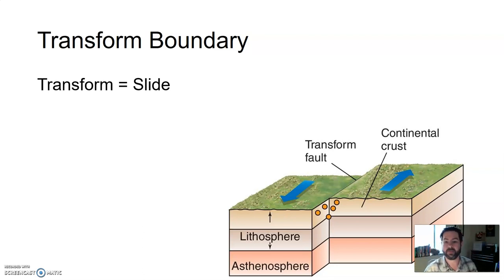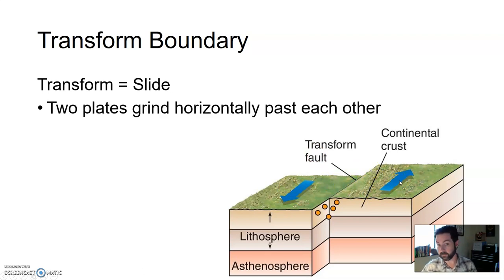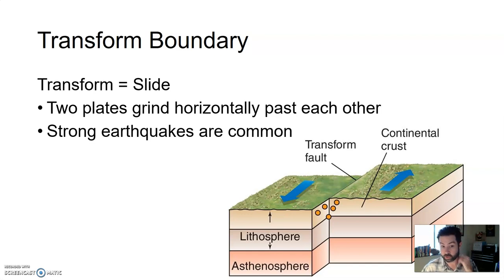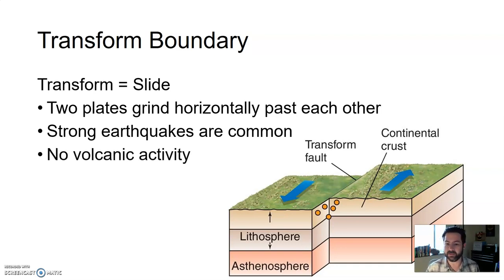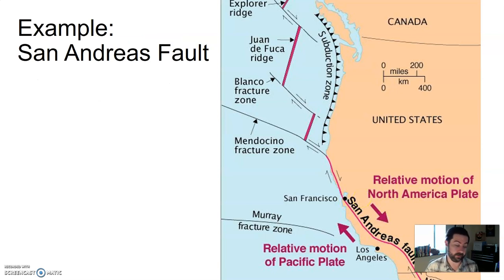As these plates grind past one another, they can get stuck and energy builds up. When that energy is released and movement occurs, that creates an earthquake. You can get strong earthquakes along transform boundaries, but really no volcanic activity — the geology just isn't quite right for that. A very well-known transform boundary, the subject of many movies, is the San Andreas Fault.